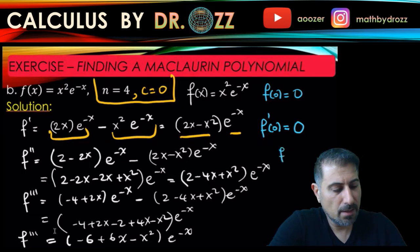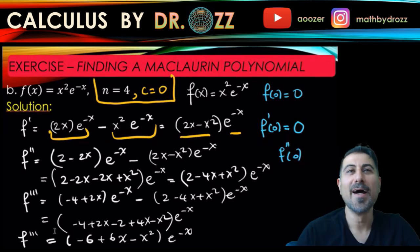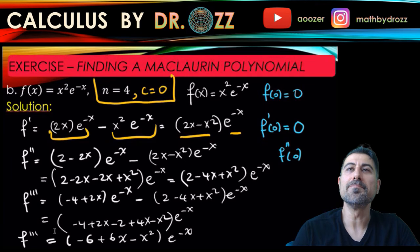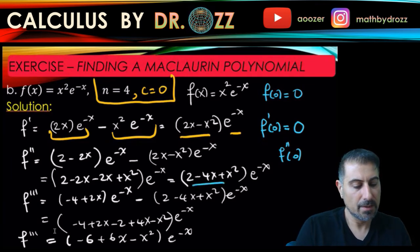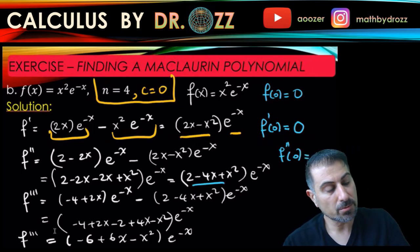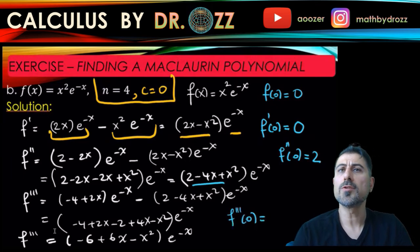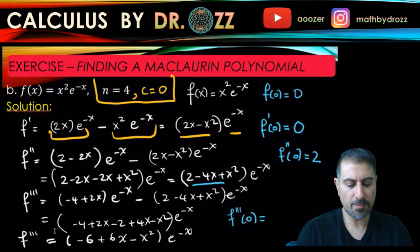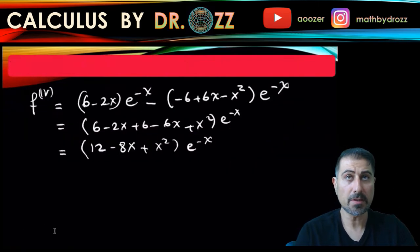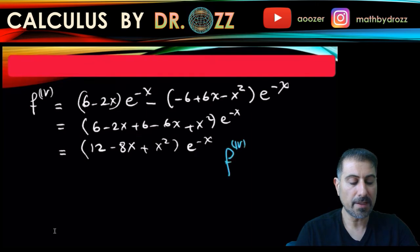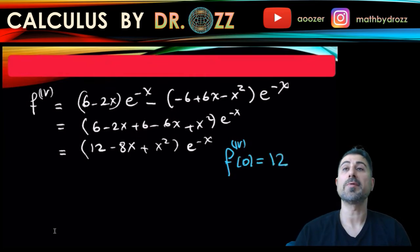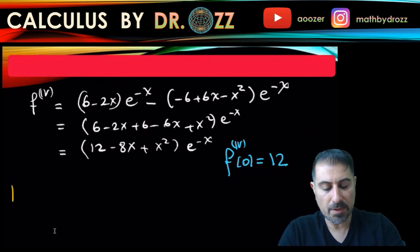For f double prime at zero: we have (2 minus 4x plus x squared) times e to the minus x. Plugging in zero — 4 times zero is zero, zero squared is zero, e to the zero is one — so f double prime of zero equals 2. For f triple prime at zero: minus 6 plus 6 times zero minus zero squared, times e to the zero, gives minus 6. And the fourth derivative evaluated at zero is 12.